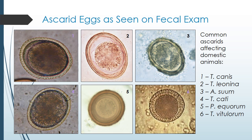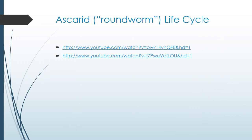These are common ascarids affecting domestic animals. On fecal flotation, Toxocara canis, Toxocara leonina, and Toxocara cati all typically have a similar appearance — a very thick outer shell and a very circular inside.